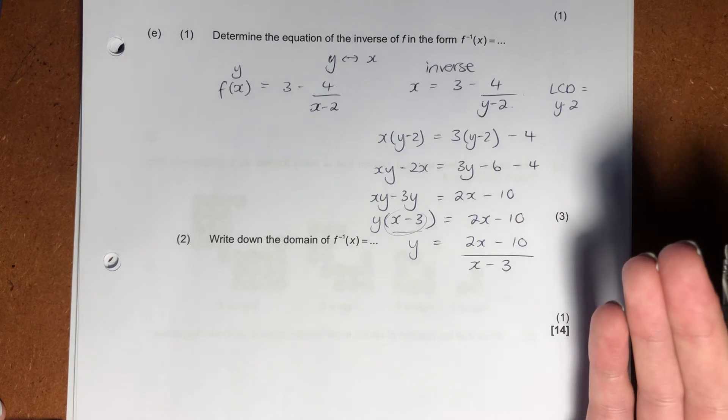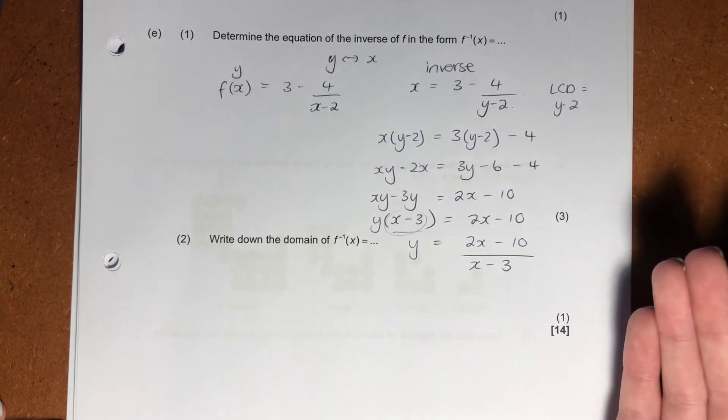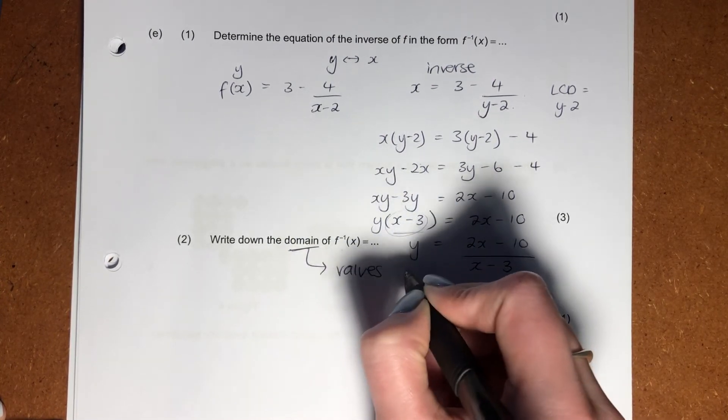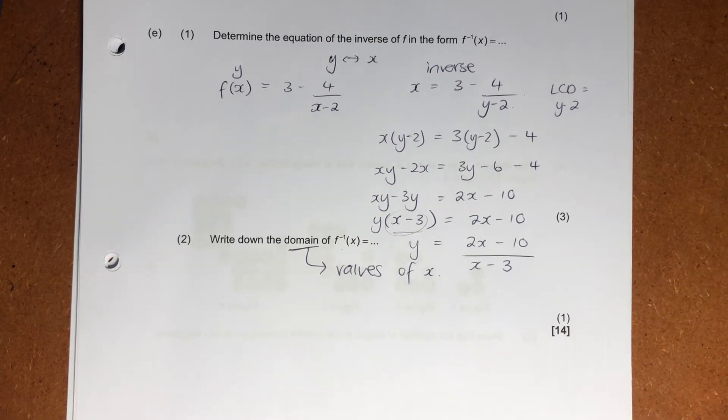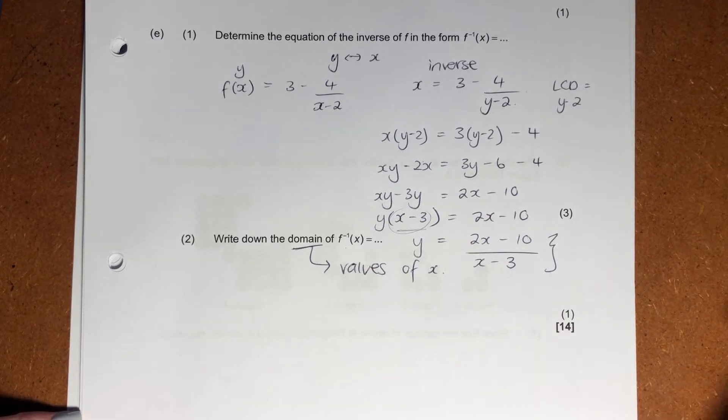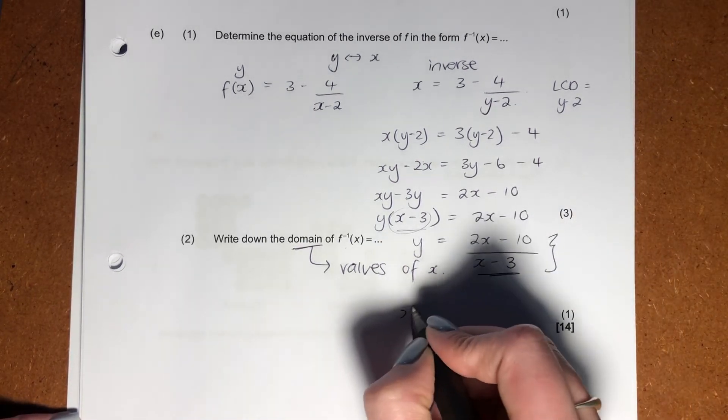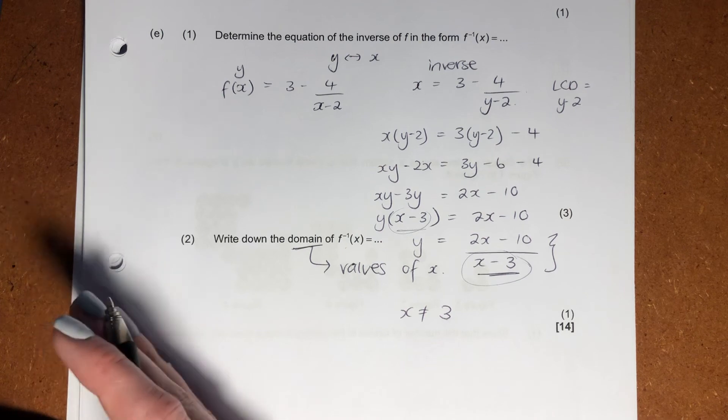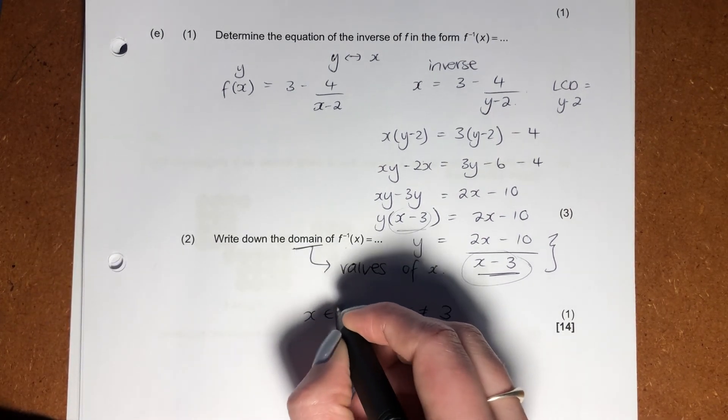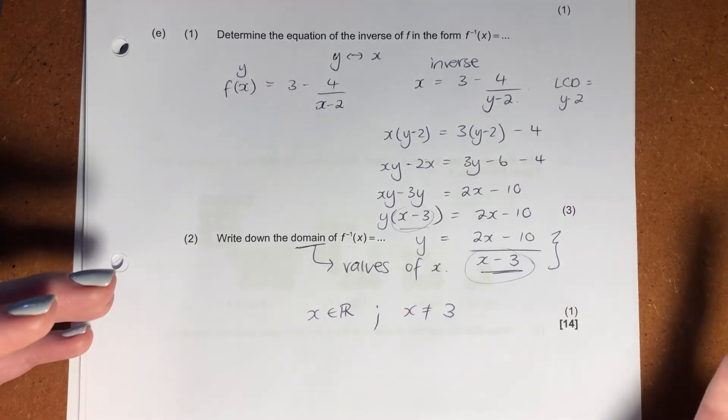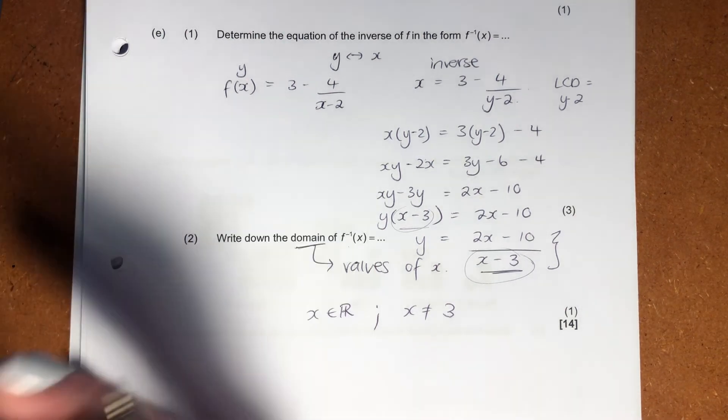Then this question, a little bit of an interpretation question, write down the domain of the inverse function. What does the domain mean? It means my values of x. So values of x, what values of x can my inverse function be? Well, it can be anything except it cannot be 3. Why can it not be 3? Because if it was 3, this denominator would become 0 and we cannot divide by 0. So x is an element of all real numbers, but it cannot equal 3 because then the denominator would equal 0 and it would be an undefined function or an undefined equation.